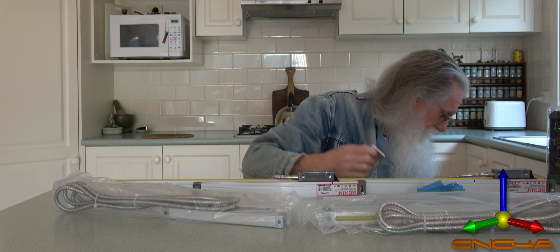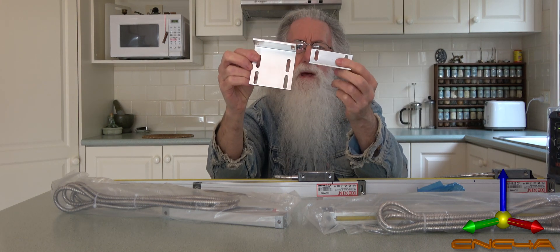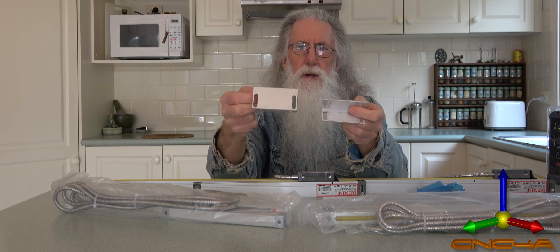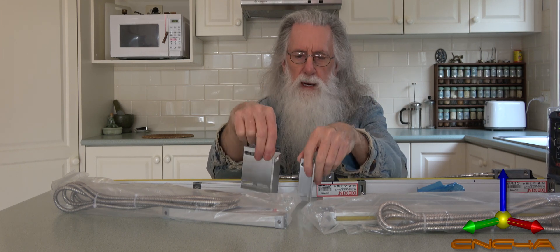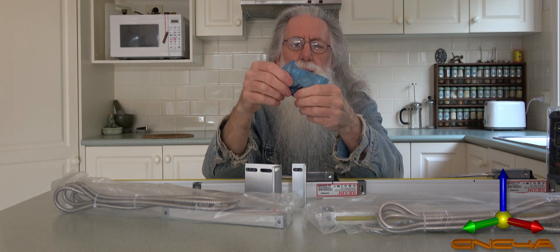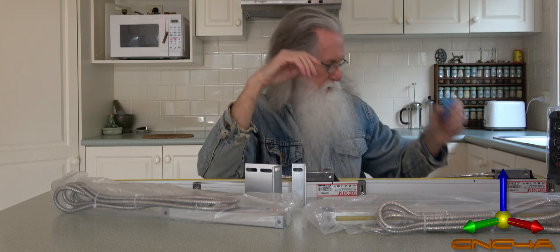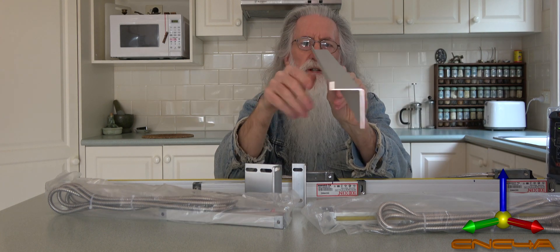They come with a bracket, different types. As you can see, very lenient with the tolerances on the holes to line them up. I'll show you what they're for in a minute. Bag of screws, washers, a couple of shims, and a couple of cable clips to hold the cabling. That's a splash guard.